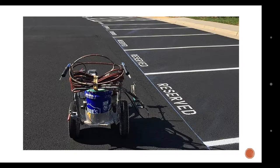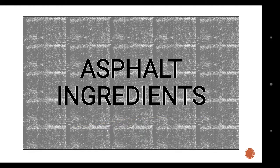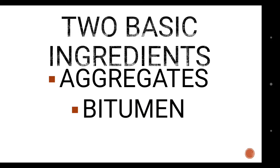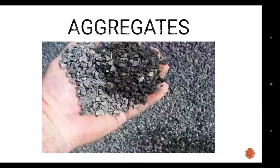Let's take a look at the asphalt ingredients. In asphalt, there are two basic ingredients: aggregates and bitumen. Aggregates are a mix of crushed stone, gravel, and sand, and they make up about 95% of hot mixed asphalt pavement.